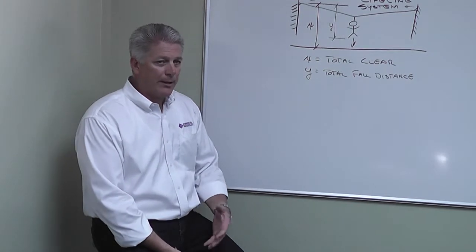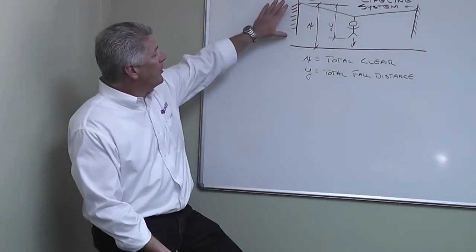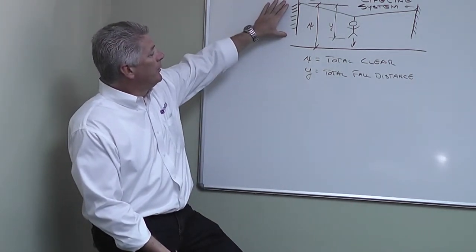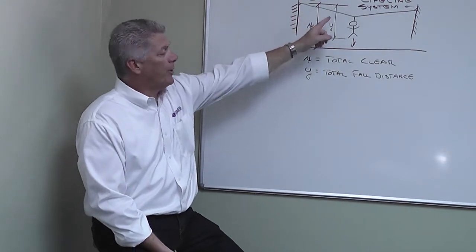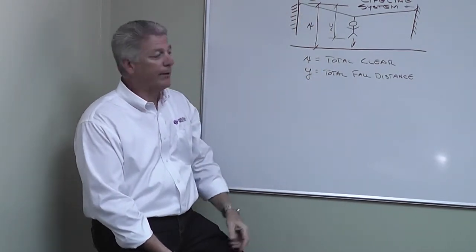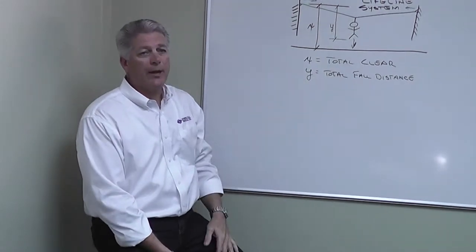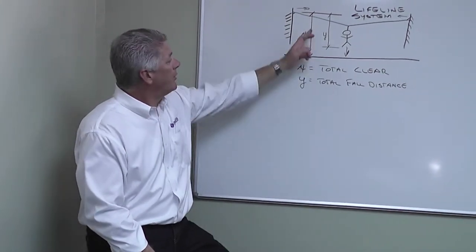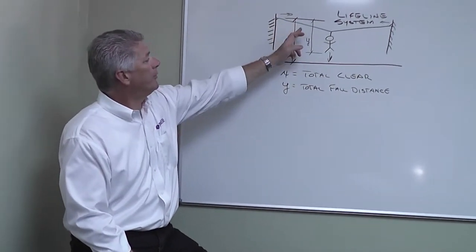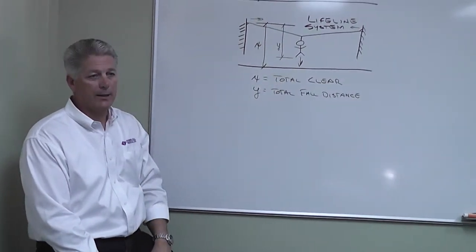One point I would like to make, on horizontal lifeline systems you have multiple connection points along the length of the lifeline. The end connections are referred to as end anchorage connections and then you're going to have at various different intervals what's referred to as an intermediate connection.